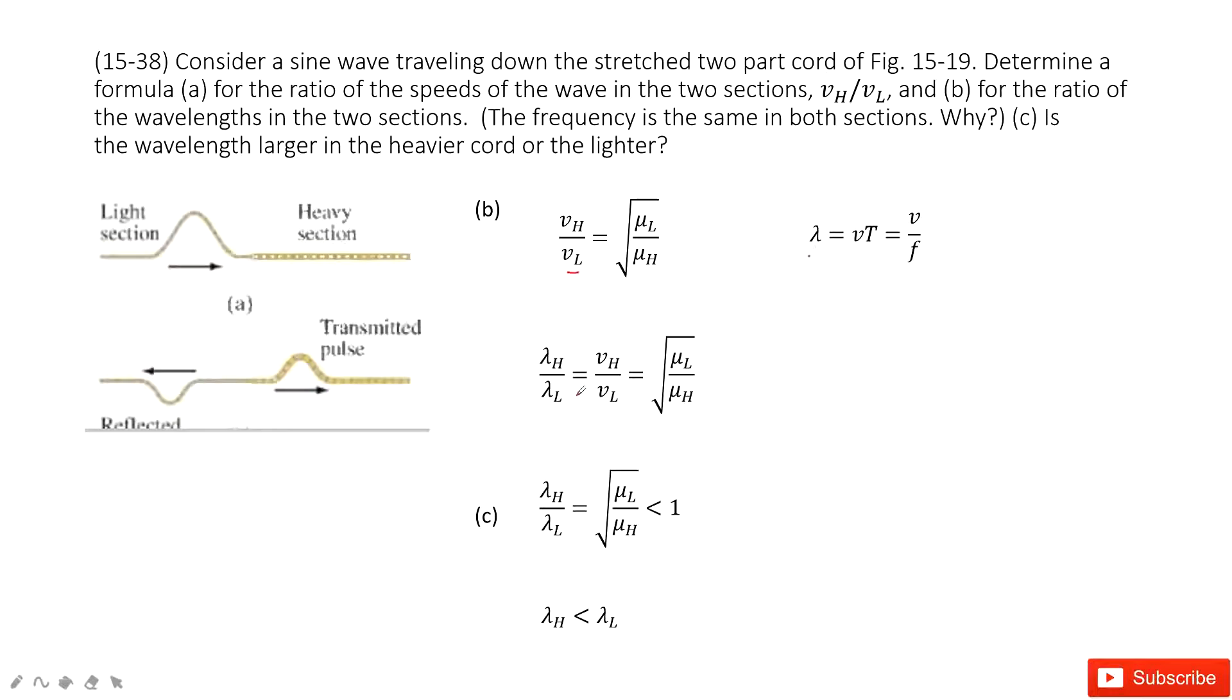So that makes the ratio of lambda H over lambda L equal to Vh over Vl, because lambda and velocity have a linear relationship and frequency is constant for both parts.